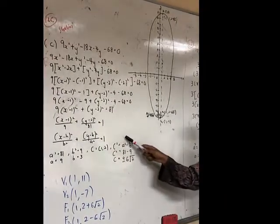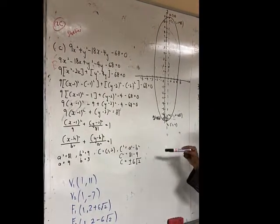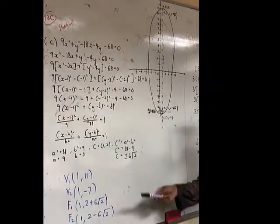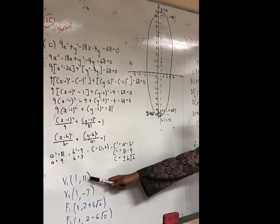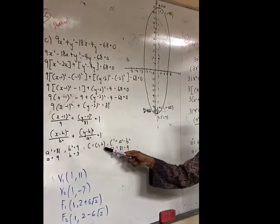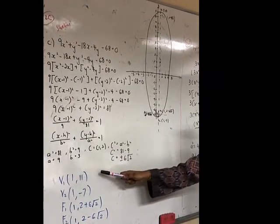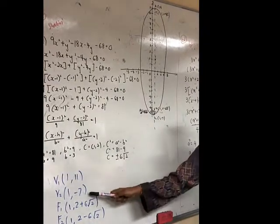For vertex 1, we take h, k plus A so we get (1, 11). For vertex 2, we need 2 minus 9, we get (1, -7).